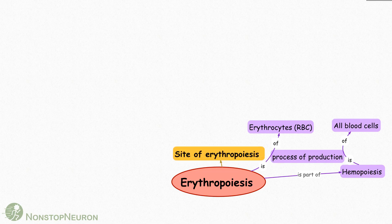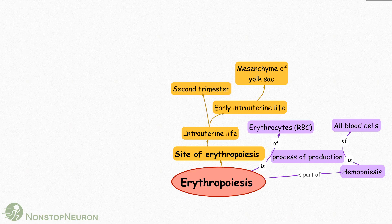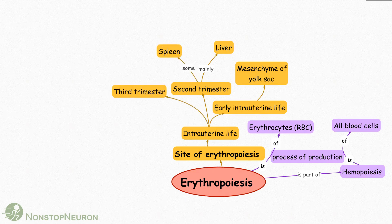Now let's see the sites of erythropoiesis. First, intrauterine life. In early intrauterine life, RBCs are produced at the mesenchyme of the yolk sac. In the second trimester, they are mainly produced by the liver and some quantity is produced at the spleen also. From the third trimester, bone marrow starts producing RBCs.